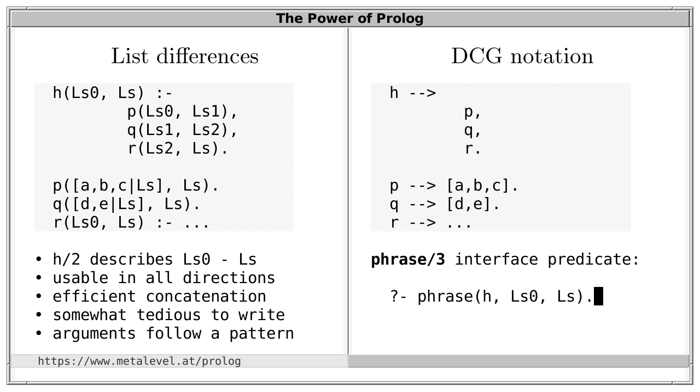The built-in predicate phrase with three arguments is the interface between DCG notation and list differences. For efficiency reasons, you can't rely on a particular expansion method, but you can rely on the fact that if you invoke phrase with the arguments H, LS0 and LS, then this is true if and only if the non-terminal H describes the list difference LS0 minus LS. This is similar to Haskell's monads in that the arguments are now implicit and this is a lot easier to type.